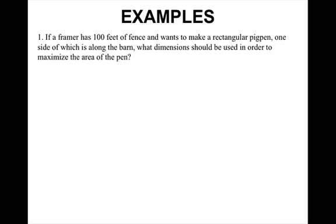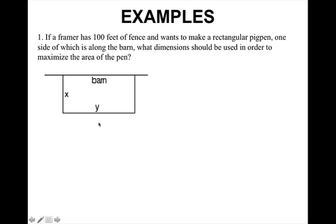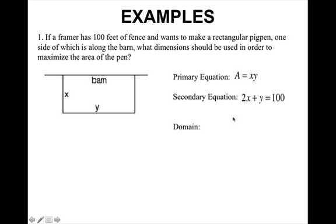Let's do some examples. If a farmer has 100 feet of fence and wants to make a rectangular pig pen, one side of which is along the barn, what dimensions should be used to maximize the area of the pen? I'm going to draw my barn picture, with the length and width represented by x and y. My primary equation for area is x times y. My secondary equation is the perimeter: 2x plus only 1y equals 100, because I don't have to fence the barn side. For substitution, it makes more sense to solve for y.